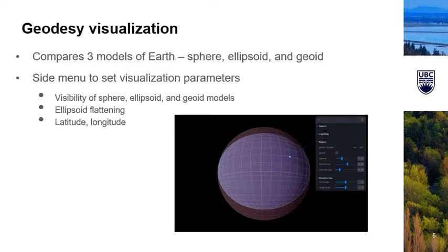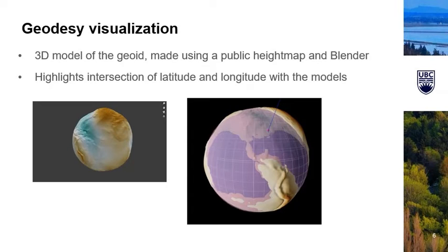A side menu allows the user to set the model parameters and which models are visible. This visualization also includes a 3D model of the geoid made in Blender using a publicly available height dataset. We gave it a diverging color scheme between brown and blue to indicate whether the geoid was higher or lower than the ellipsoid. We've also highlighted the intersections of the latitude and longitude with the three different models to make the height differences clearer.